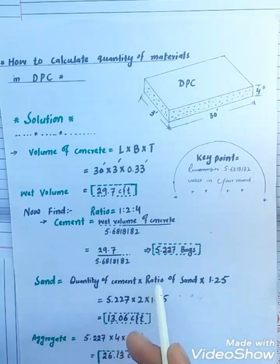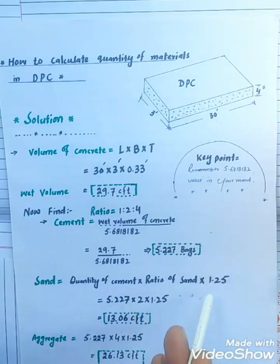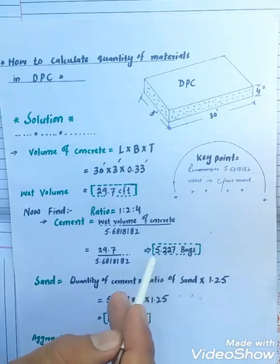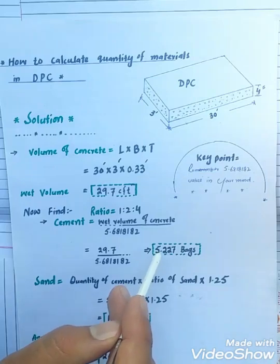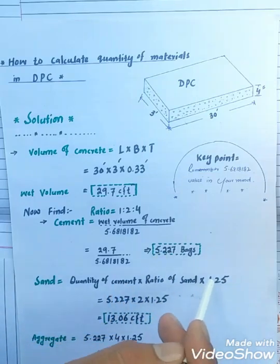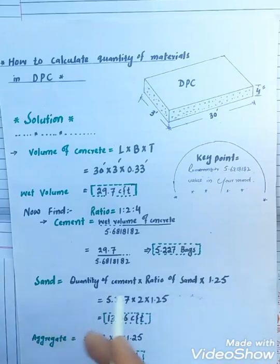Quantity of cement multiply by ratio of sand multiply by 1.25. What is 1.25, my dear viewers? The amount of cement is in bags. If you don't multiply with 1.25, this gives value in bags, but we require the amount of sand in cubic feet. 5.227 multiply by 2 multiply by 1.25. The sand required is 13.06 cubic feet.